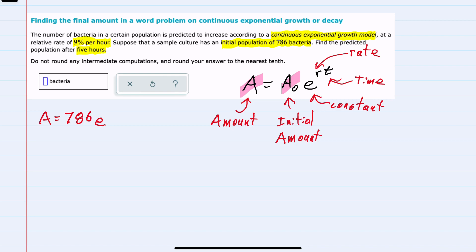raised to the rate of 9% per hour. So as a decimal, that would be 0.09 as our rate. That rate is per hour, and the number of hours is 5 hours, so our time is 5.